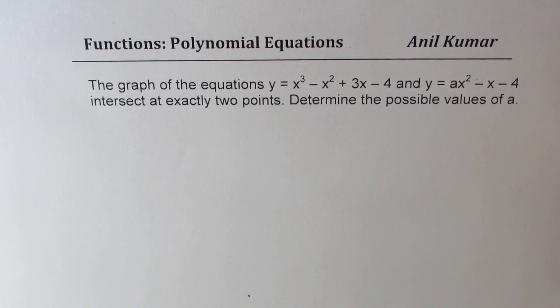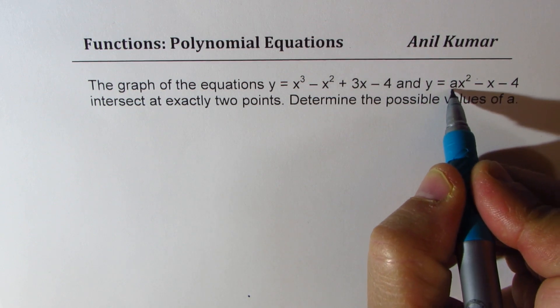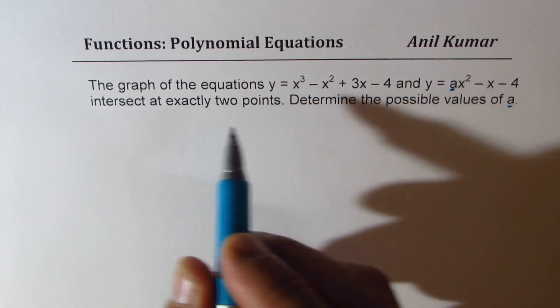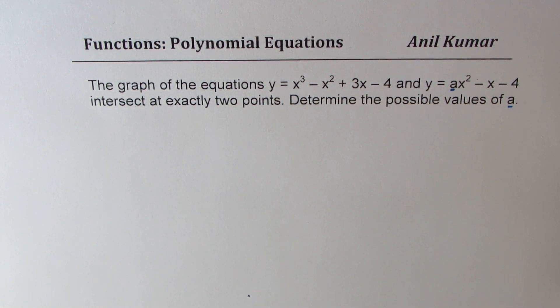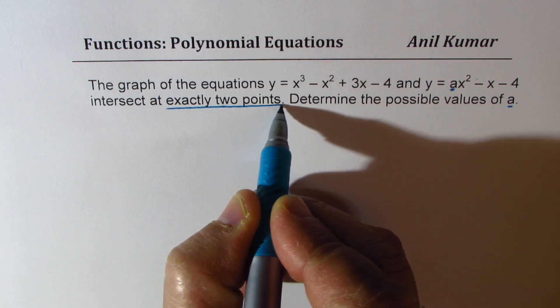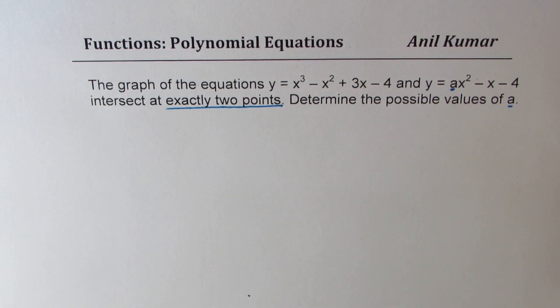So that's the equation for you. We need to find what a is so that these two graphs, which is a cubic polynomial and a parabola, intersect exactly at two points.